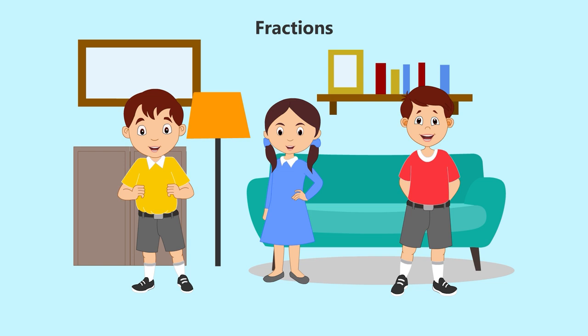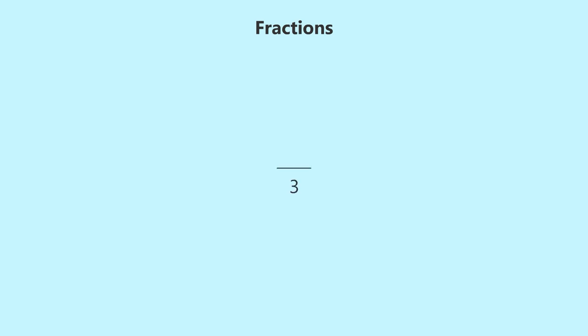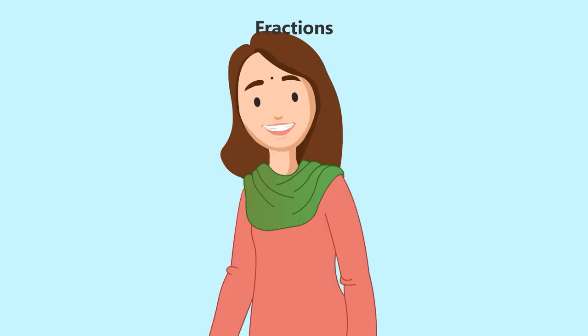We have to take one among three. Write three below a horizontal line and one part taken from it should be written above like this. One divided by three. And then, Atul, if you are given two parts, then how will you write it? It is easy. One line and three below it and two above it. That is two divided by three.